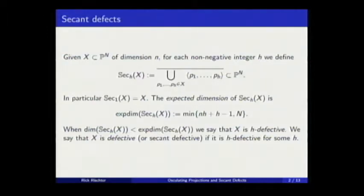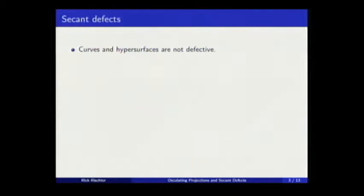Not all varieties have the secant variety with the expected dimension, but most of them should have. The ones that do not have this expected dimension are called secant defective, or if you specify the h, h-defective. Curves and hypersurfaces are not defective. Defective surfaces were classified by Terracini in the beginning of the century, and threefolds defective were classified by Chiantini and Ciliberto in 2003.